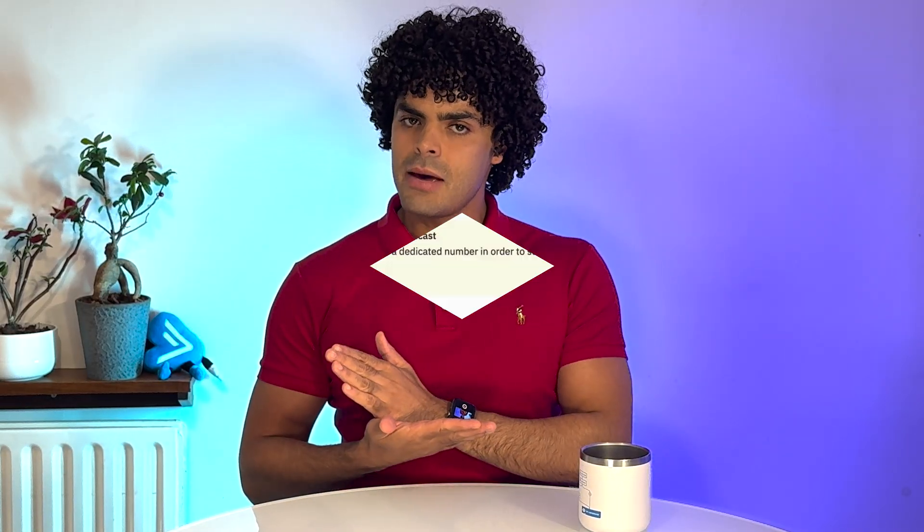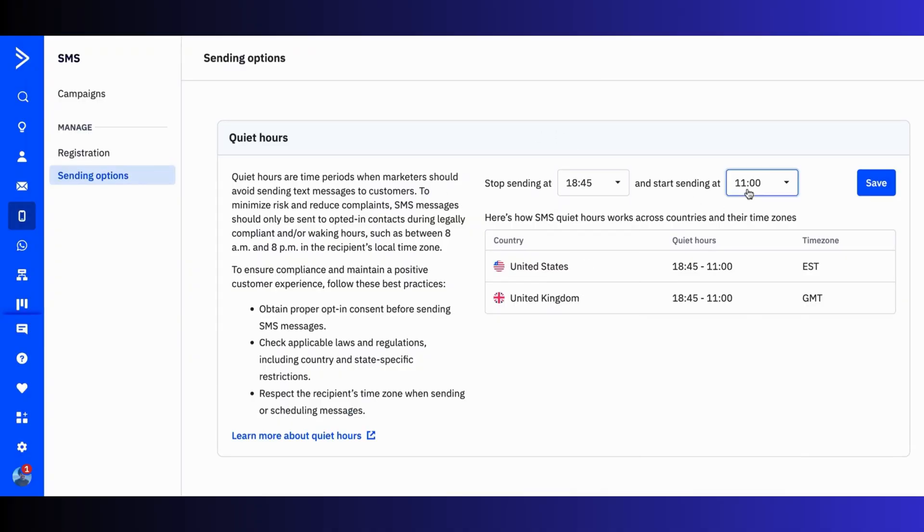Nobody likes getting a marketing text at 3am, right? With the new Quiet Hours feature, you can set a specific time window for when messages should and shouldn't be sent. This ensures compliance with regulations like TCPA, which restricts SMS marketing messages from being sent between 9pm and 8am. By default, messages will stop sending from 6:45pm and resume at 11am, but you can customize these times in the settings.